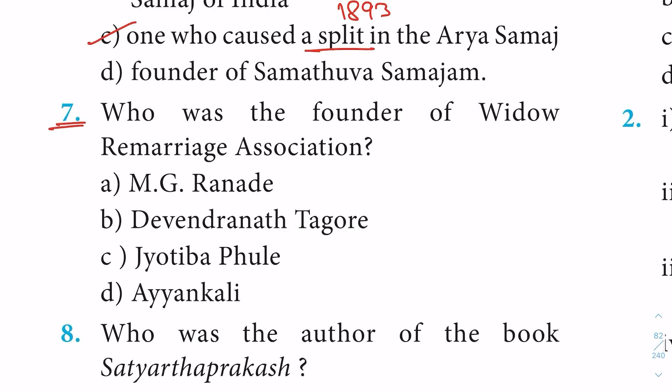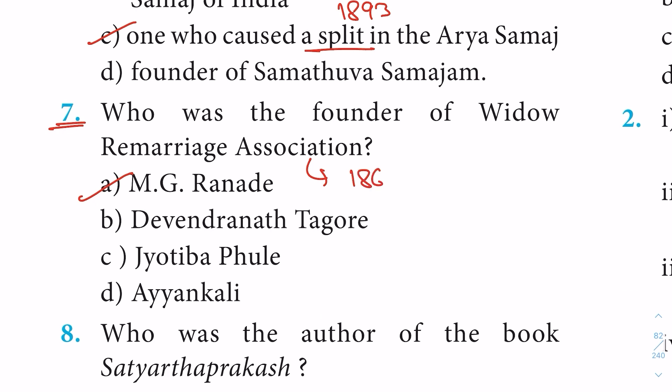Question 7: Who was the founder of the Widow Remarriage Association? Option A: M.J. Ranade. The association was started in the year 1861.